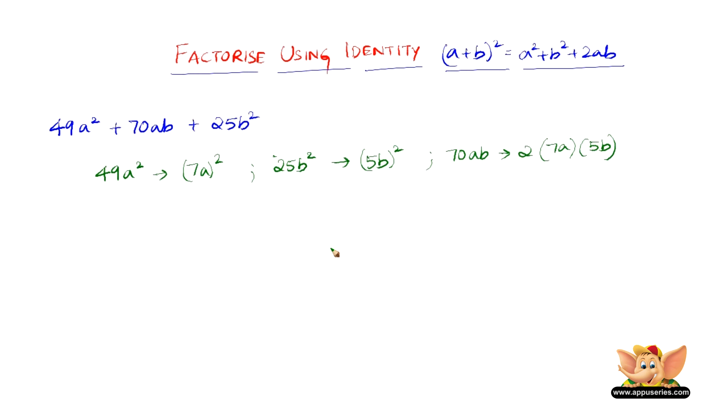So here we have a as 7a and b as 5b and 2ab as 2 into 7a into 5b. Therefore, we can factorize 49a square plus 70ab plus 25b square as 7a plus 5b the whole square.